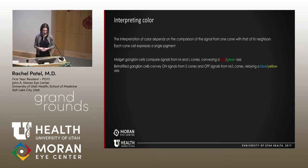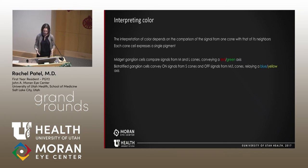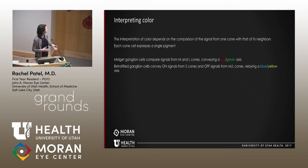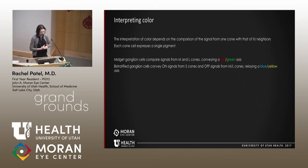Just having these pigments isn't enough to interpret a signal as color. Color interpretation relies in part on comparing signals from different cone types and relaying that pathway to the brain. To function optimally, a cone should express a single pigment and be surrounded by neighboring cones expressing different pigments. Midget, or parvocellular, ganglion cells convey the comparison between M and L cones, relaying a red-green axis. Bistratified ganglion cells compare on-signals from S cones with off-signals from M and L cones, relaying a blue-yellow axis.